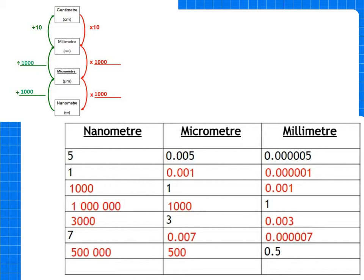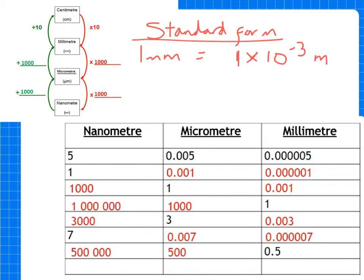Just a quick reminder about standard form. I intend to do a video about standard form, but very quickly: one millimeter equals 1 times 10 to the minus 3 meters, one micrometer equals 1 times 10 to the minus 6 meters, and one nanometer equals 1 times 10 to the minus 9 meters.